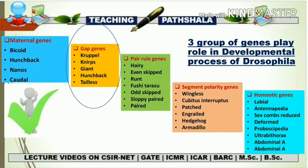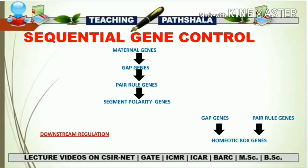The five gap genes are krüppel, knirps, giant, hunchback, and tailless — you have to remember these names. As mentioned in the very first video of developmental biology, all events in the developmental process are sequential. So these genes also act in a sequential manner: maternal genes regulate gap gene expression, gap genes regulate pair rule genes, pair rule genes regulate segment polarity genes, and homeotic selector genes are regulated by both gap genes and pair rule genes. Overall, the upstream genes regulate the downstream genes in a cascade.